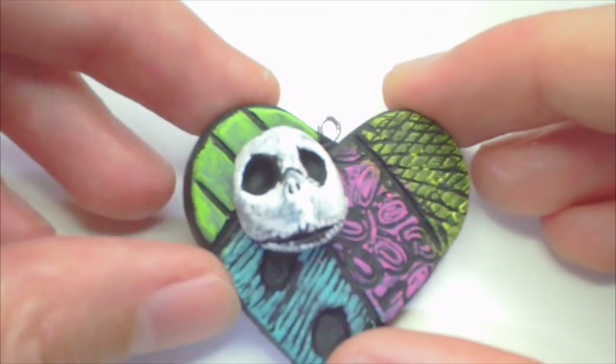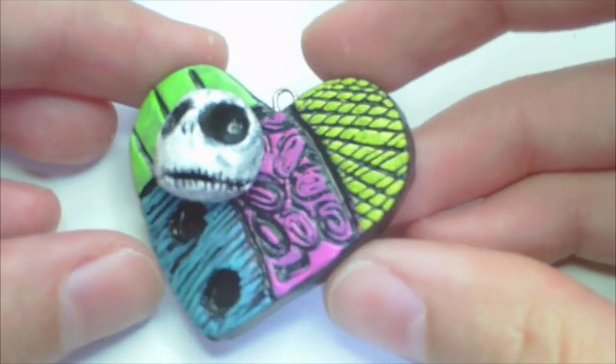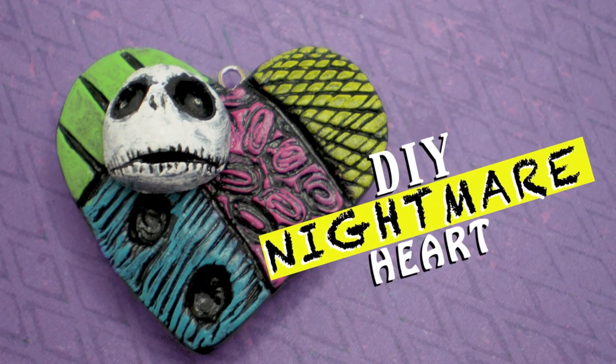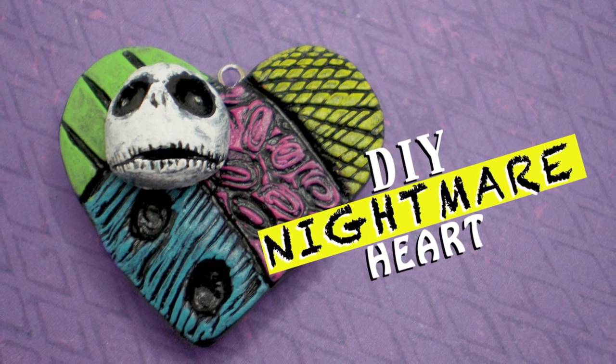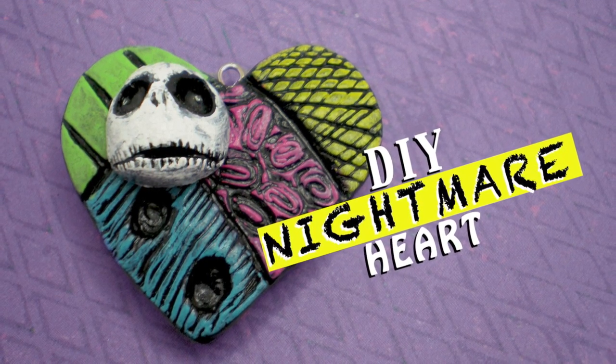Then when everything is dry, go ahead and add gloss to the outside. That'll help keep the paint from scratching off. Then there you go, your own Nightmare Before Christmas themed heart charm. So, thanks for watching, bye!